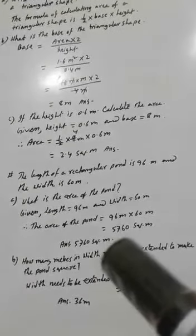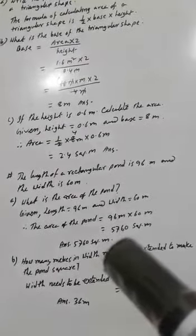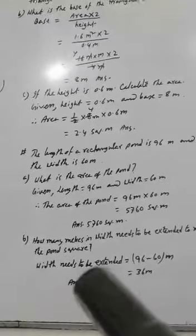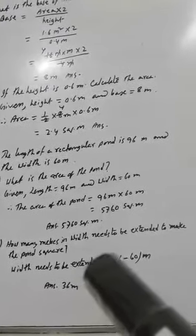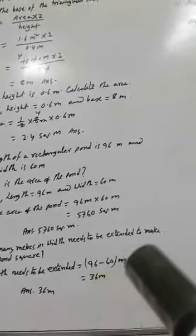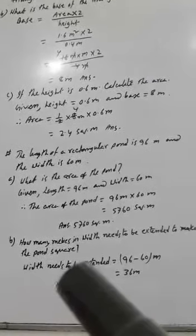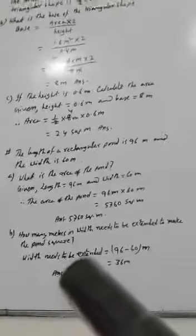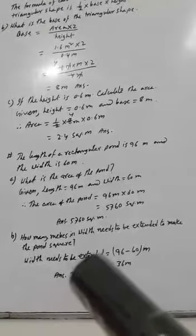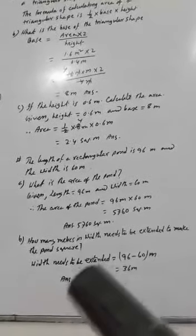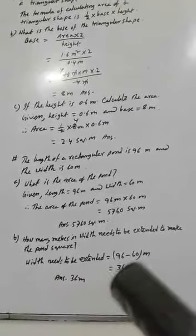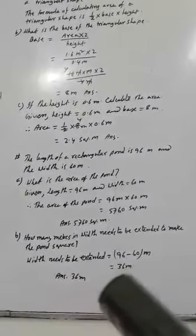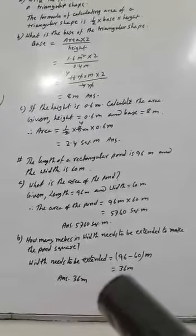The area of the pond is 5760 square meters. How many meters in width needs to be extended to make the pond square? To make the pond square, the length is 96 meters and the width is 60 meters. If we subtract, we get 36 meters.